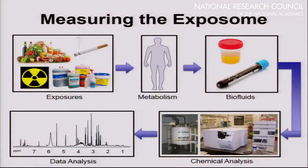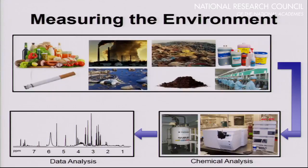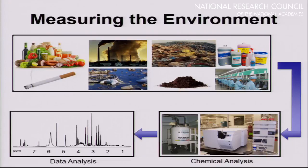To do the exposome — the internal exposures — we track what people have been exposed to, things get processed in the body, we collect biofluids and run through the same process. Rather than looking at endogenous metabolites, we're trying to track exogenous or transformed chemicals in the body, using the same equipment and analytical tools. Same thing for environmental metabolomics: we can sample foods, air, water, and sentinel organisms using exactly the same tools to measure, quantify, and characterize these mixtures — covering all three components of exposures.